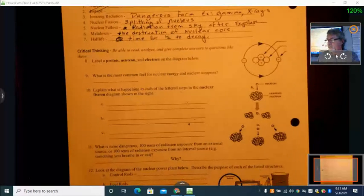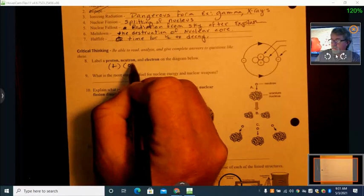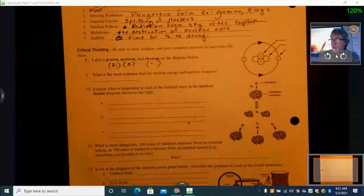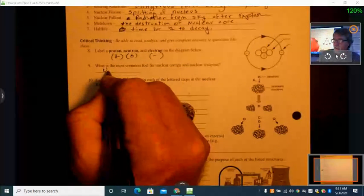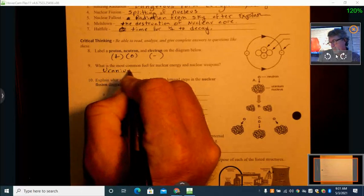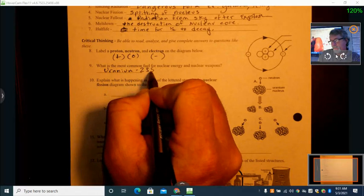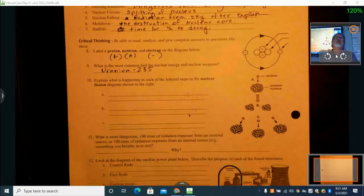Meltdown is the destruction of nuclear core. And it will literally melt because it gets so hot it melts down, but the core itself melts, and it also causes a rapid expansion of gases, which could blow it off. Half-life is the time for half to decay, for radioactive to decay. Proton, neutron, and electron. The protons are positive, neutrons are neutral, and the electrons are negative. What's the most common fuel for nuclear weapons? Uranium. I don't know if you all remember, 235, but there's another form, 238, but uranium-235 is the most common.